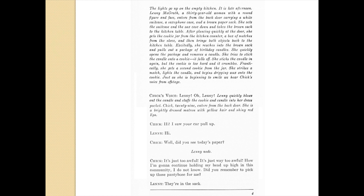She sets the suitcase and sack down and takes the brown sack to the kitchen table. A table — this also suggests a time period because a lot of kitchens today don't have kitchen tables. We often go into a dining room to eat. Then: after glancing quickly at the door she gets the cookie jar from the kitchen counter, a box of matches from the stove. This suggests a kitchen counter, a stove, and matches next to it — which suggests a gas stove. The script is giving me clues about this environment.